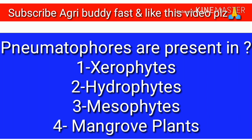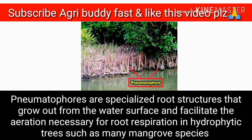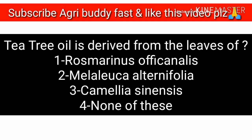Question 3: Nematophores are present in: option A - xerophytes, option B - hydrophytes, option C - mesophytes, option D - mangrove plants. The answer is mangrove plants. Nematophores are specialized root structures that grow out from the water surface and facilitate the aeration necessary for root respiration in hydrophytic trees such as many mangrove species.